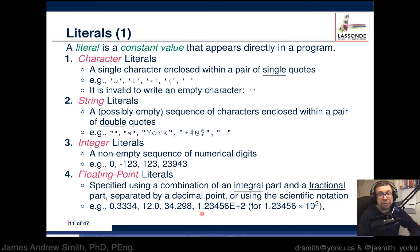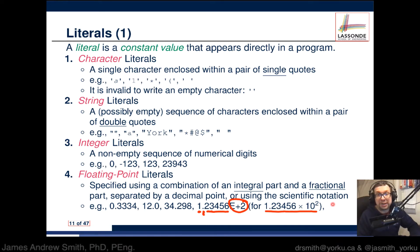If you wanted to represent 123.456, you could use scientific notation, where you'd have 1 and then the decimal point, followed by 2, 3, 4, 5, 6 after the decimal point. By having e+2 at the end — this is what you would write in your program — you're saying this is 1.23456 multiplied by a factor of 100, which equals 123.456.